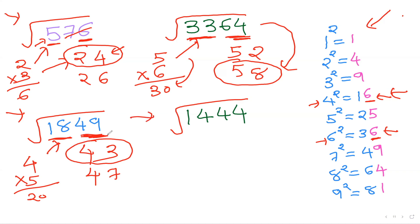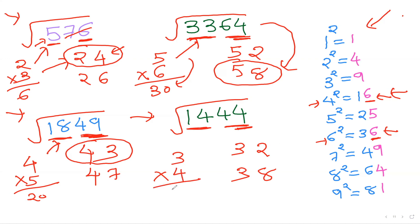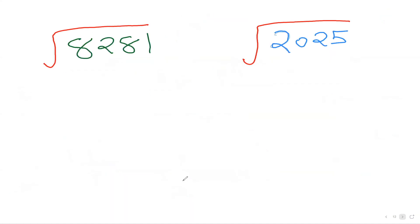Now you try: square root of 1444. Last digit is 4, so it can be 2 or 8 (since 10 − 2 = 8). Remove last two digits, leaving 14. 3² = 9, 4² = 16 — too big, so use 3. Possible answers: 32 or 38. Multiply 3 × 4 = 12. Our leftover 14 is bigger than 12, so choose the bigger answer: 38.